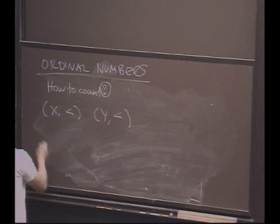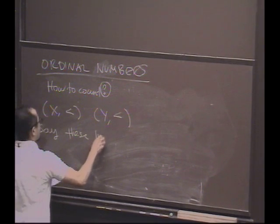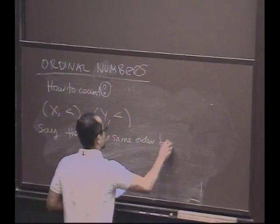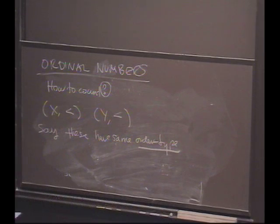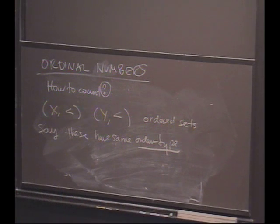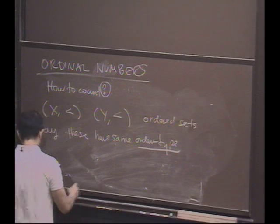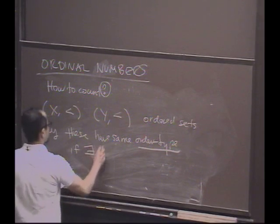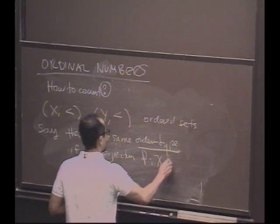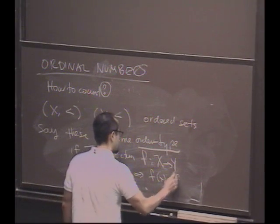Examples might be the real numbers with the usual ordering, the natural numbers with the usual ordering, or a set of vectors with the lexicographic ordering. Let me define what I mean by an order type. I'm going to say that these two ordered sets have the same order type if there exists a bijection between X and Y that preserves the order — that is, a bijection f from X to Y such that x less than y implies f(x) is less than f(y).